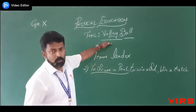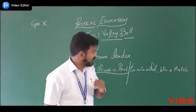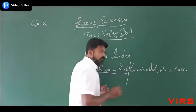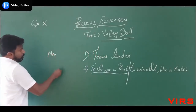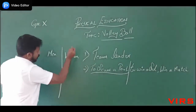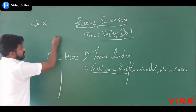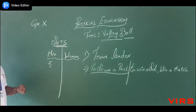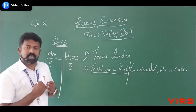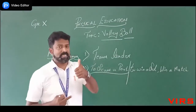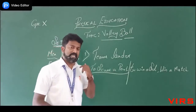Moving on to sets — for men and women the number of sets varies. For men, 5 sets are played. For women, 3 sets are played. In men's volleyball, the sets are called first, second, third, fourth, and the fifth is called the deciding set. For women, the first, second, and third set — the third being the deciding set.